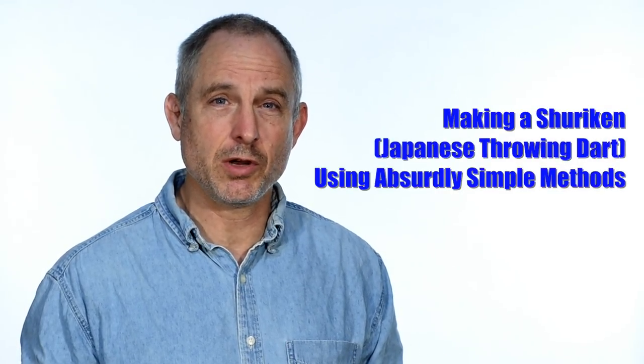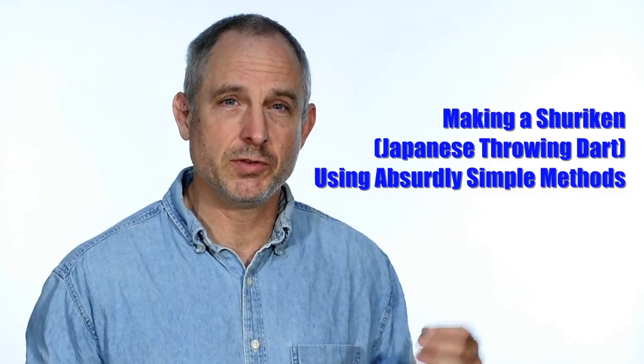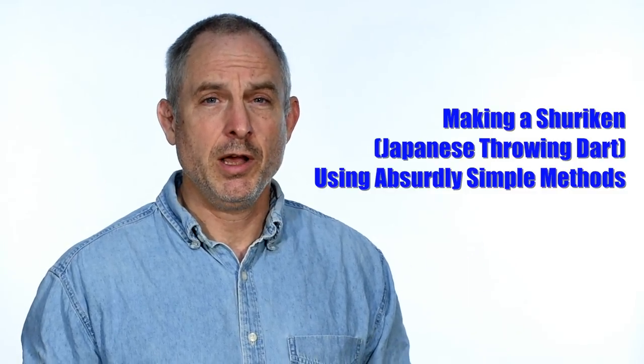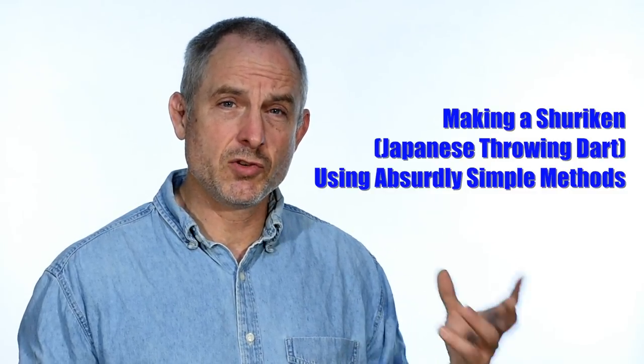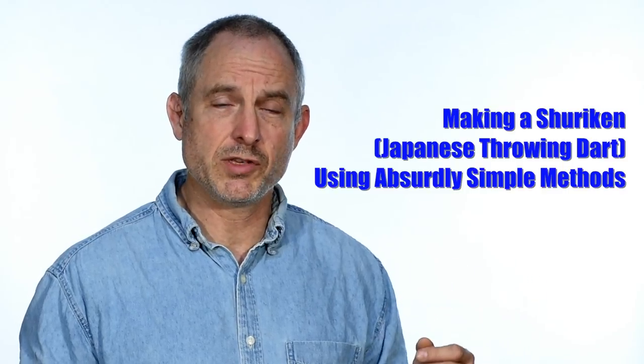So everybody's familiar with the shuriken or Japanese throwing star, sometimes referred to as a ninja throwing star. But the shuriken historically was actually more often seen in the form of what's known as a bow shuriken, basically it's kind of like a dart or a nail. And that's what we're going to make today.